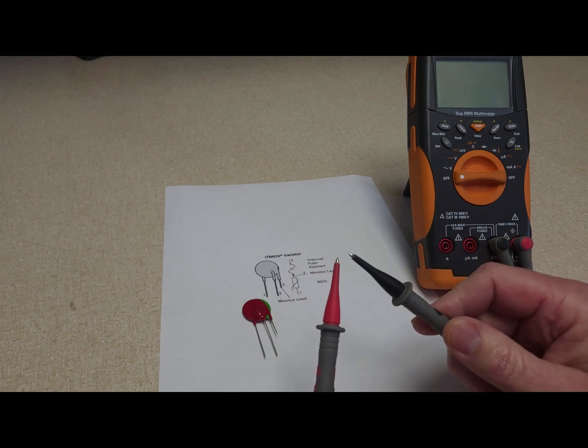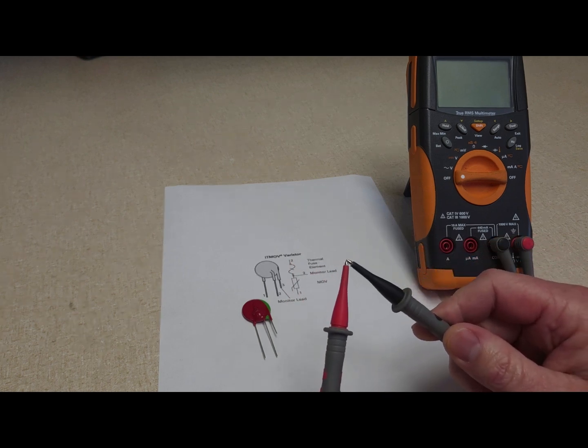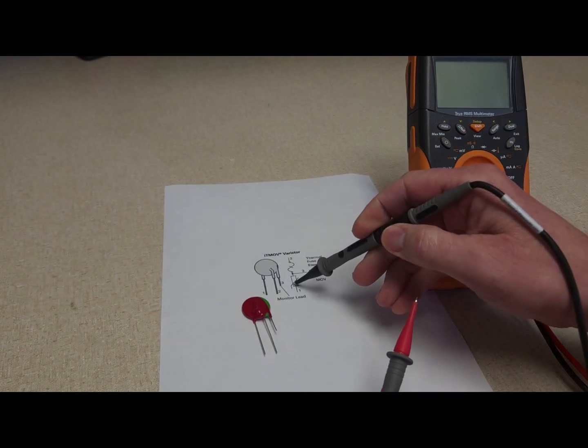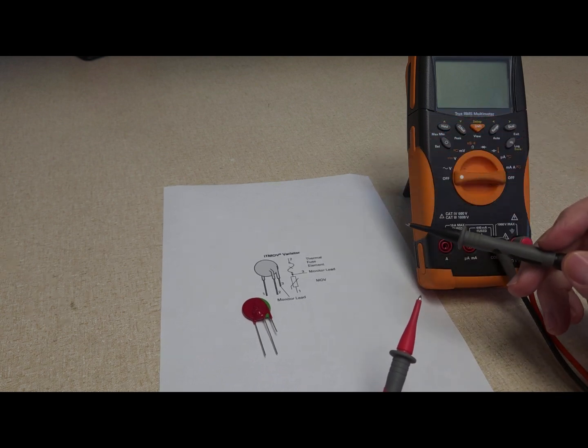When the voltage begins to exceed its rating it begins to become closed or on, and in that case the surge will be diverted through the MOV and then out to ground or however your surge protection design.